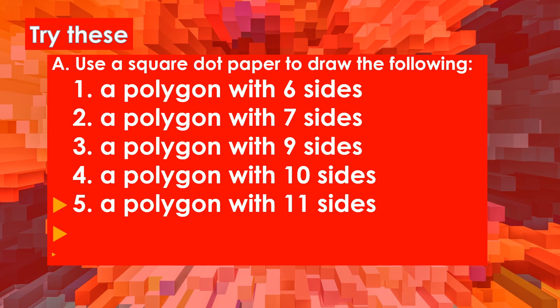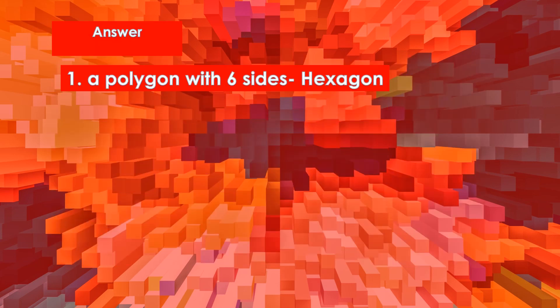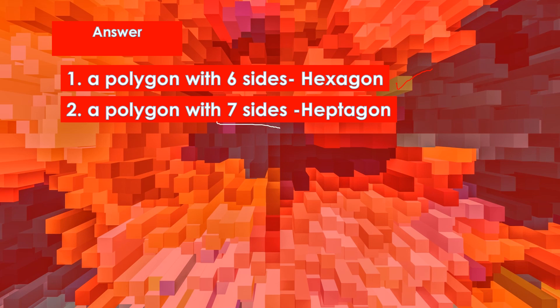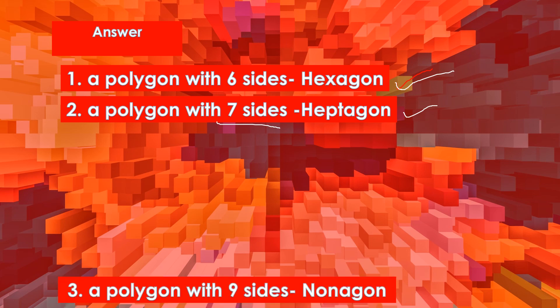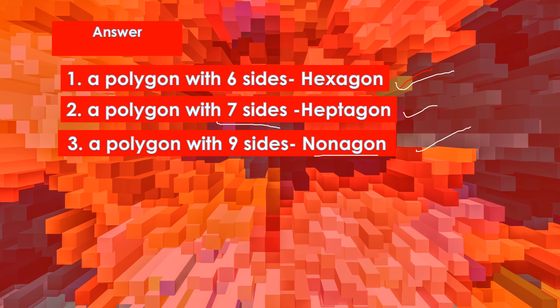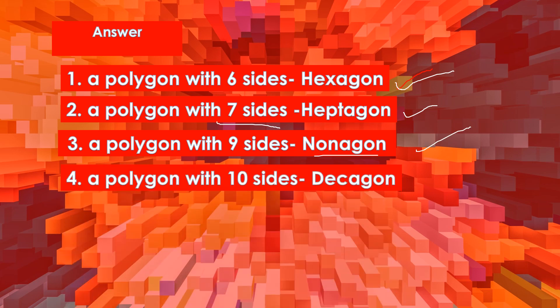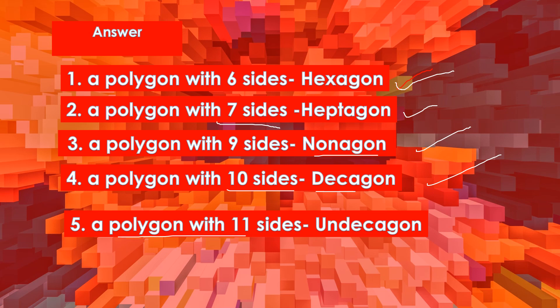Now I want you to try this. Use a square dot paper to draw the following: one, a polygon with six sides; two, a polygon with seven sides; three, a polygon with nine sides; four, a polygon with ten sides; and five, a polygon with eleven sides. A polygon with six sides is called a hexagon. A polygon with seven sides is called a heptagon. A polygon with nine sides is a nonagon. A polygon with ten sides is called a decagon. And a polygon with eleven sides is called a hendecagon. You have to remember that.